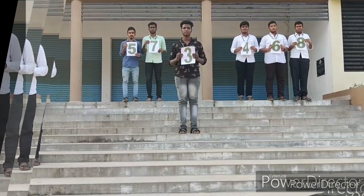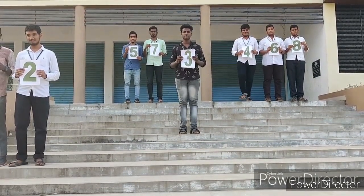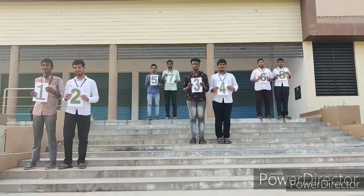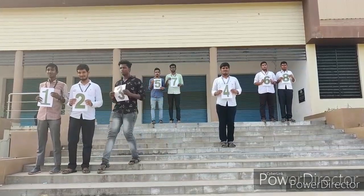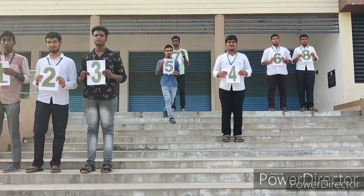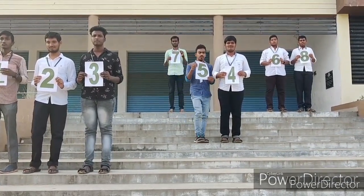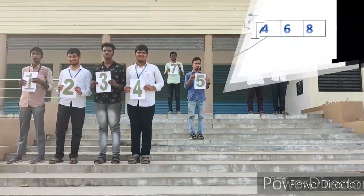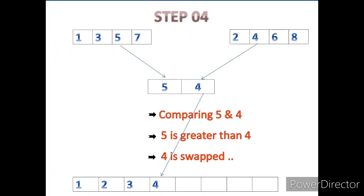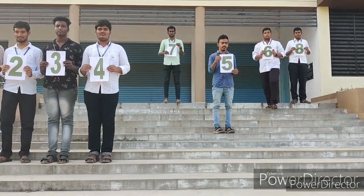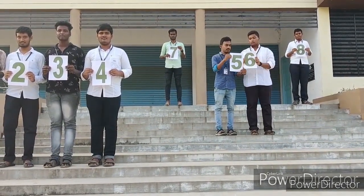Three remains in the array and four comes to compare with three. Three is lesser than four, so three is swapped. That is step three. Four remains in the array; five is compared with four — four is lesser than five, so it is swapped. That is step four.